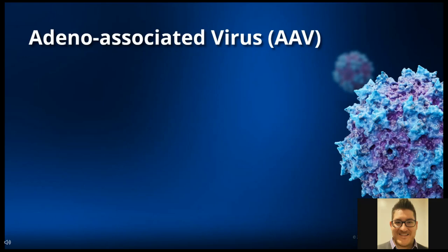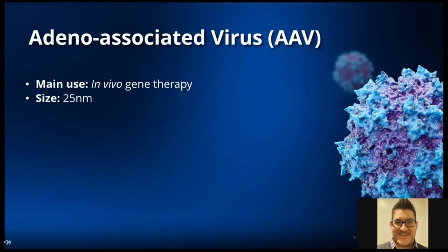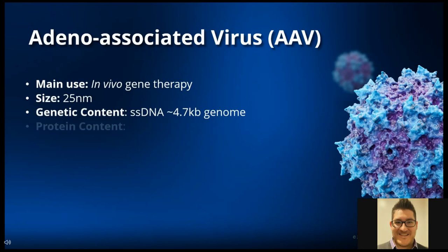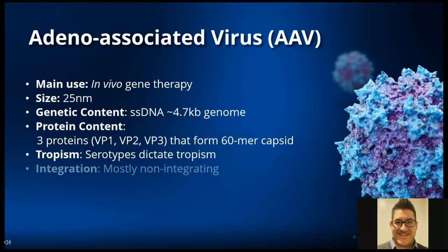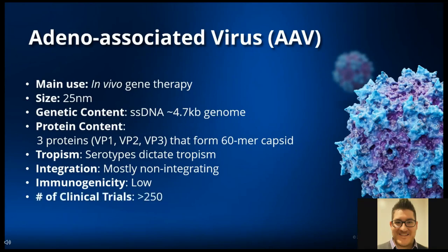Adeno-associated viruses, or AAVs, are mainly used in in vivo gene therapy. AAVs are small viruses at around 25 nanometers and contain a single-stranded DNA genome of approximately 4.7 kilobases. From a protein perspective, there are three capsid proteins — VP1, VP2, and VP3 — that form a 60-mer capsid. Tropism is dictated by different serotypes. AAVs are mostly non-integrating and have low immunogenicity, making them attractive gene therapy delivery vehicles. There are over 250 clinical trials, demonstrating the vast importance of these viruses for gene therapy.